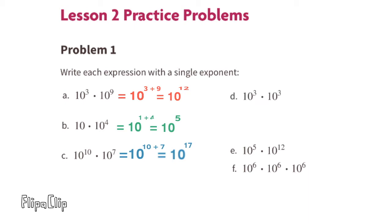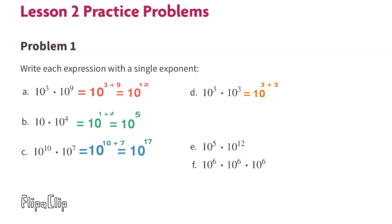Part D: 10 to the power of 3 times 10 to the power of 3. That's a total of 10 to the power of 6 — you're going to multiply 10 times itself 6 times.